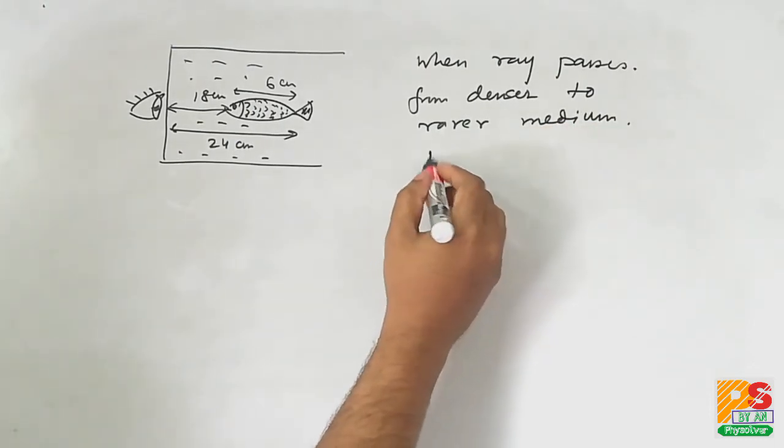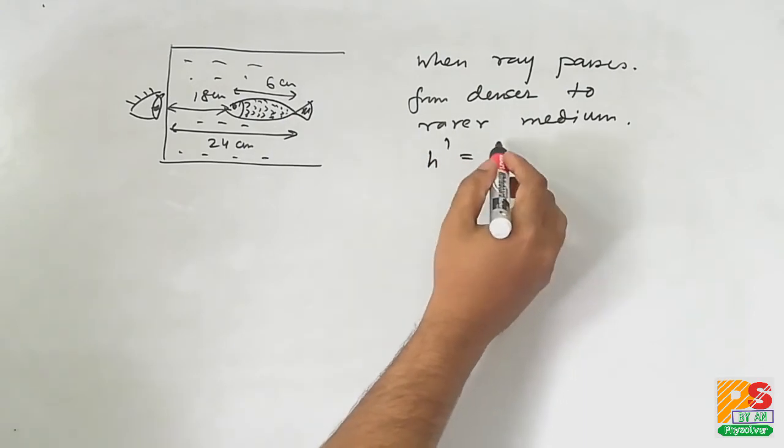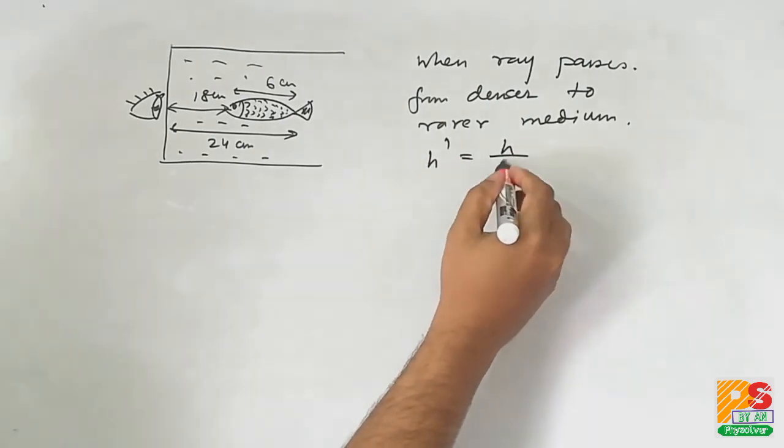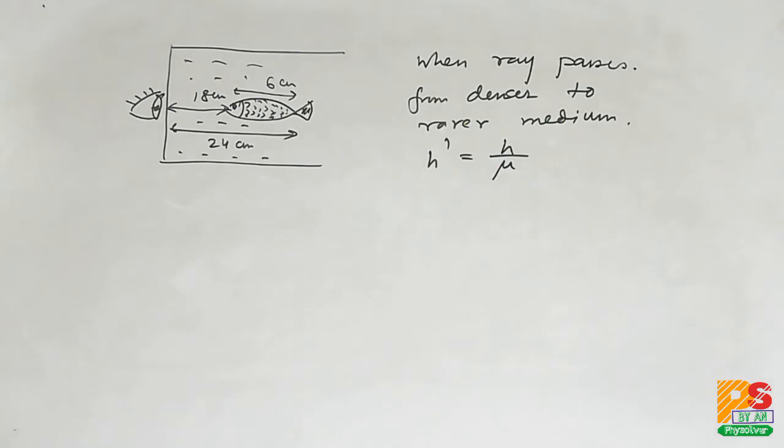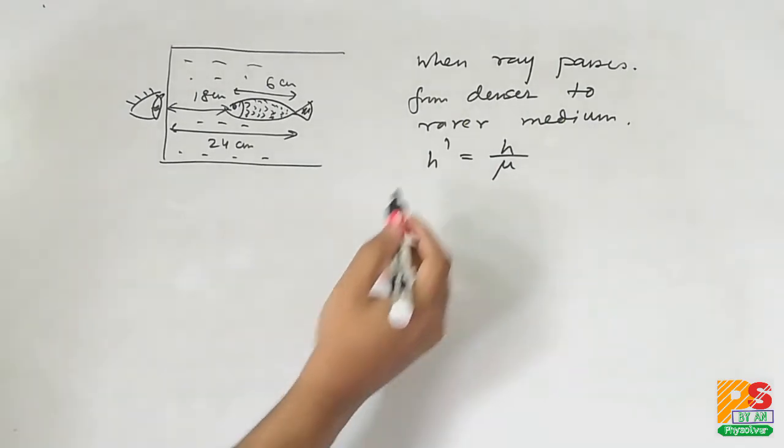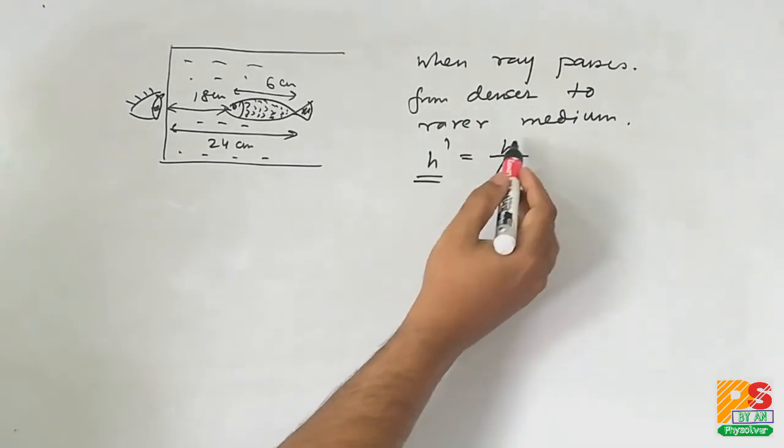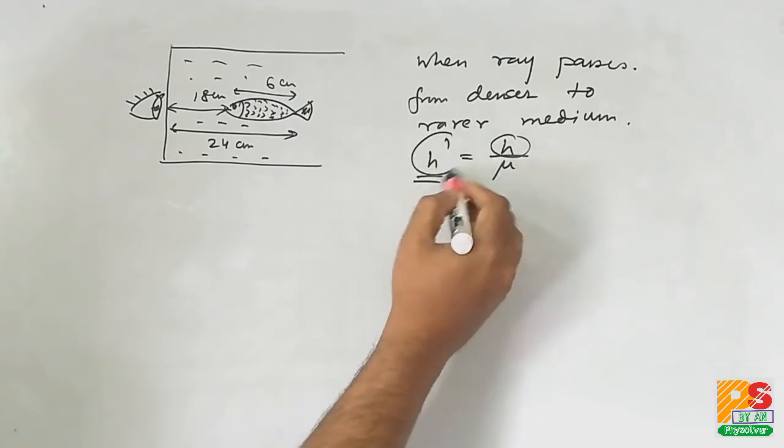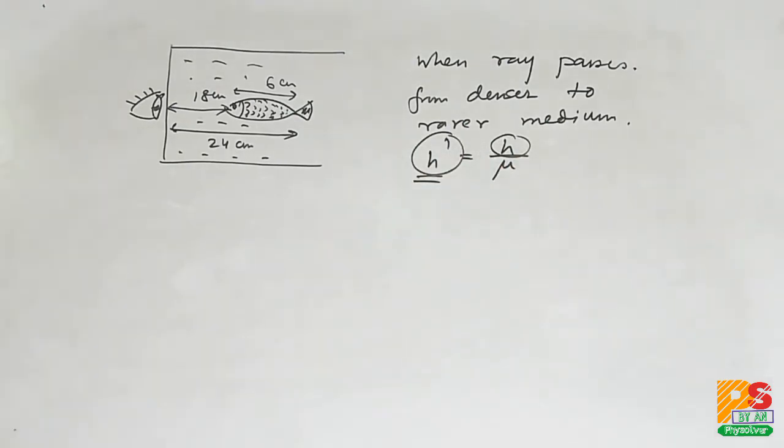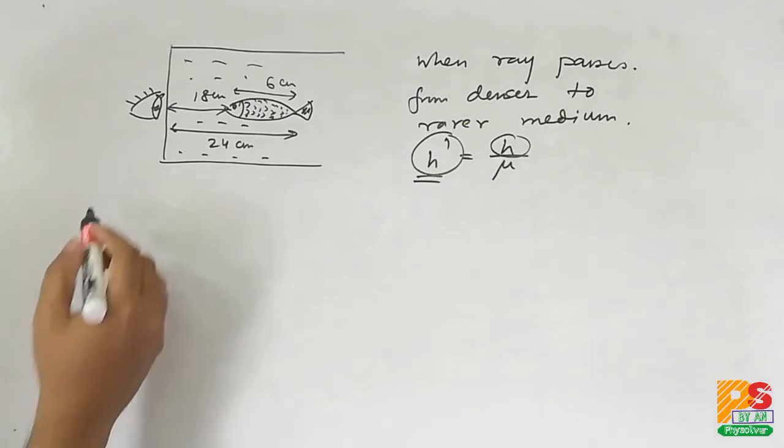Therefore, the relation between apparent depth and real depth will be h' = h/μ, where h' is the apparent depth or apparent distance in this case, and h is the real depth or real distance in this case.